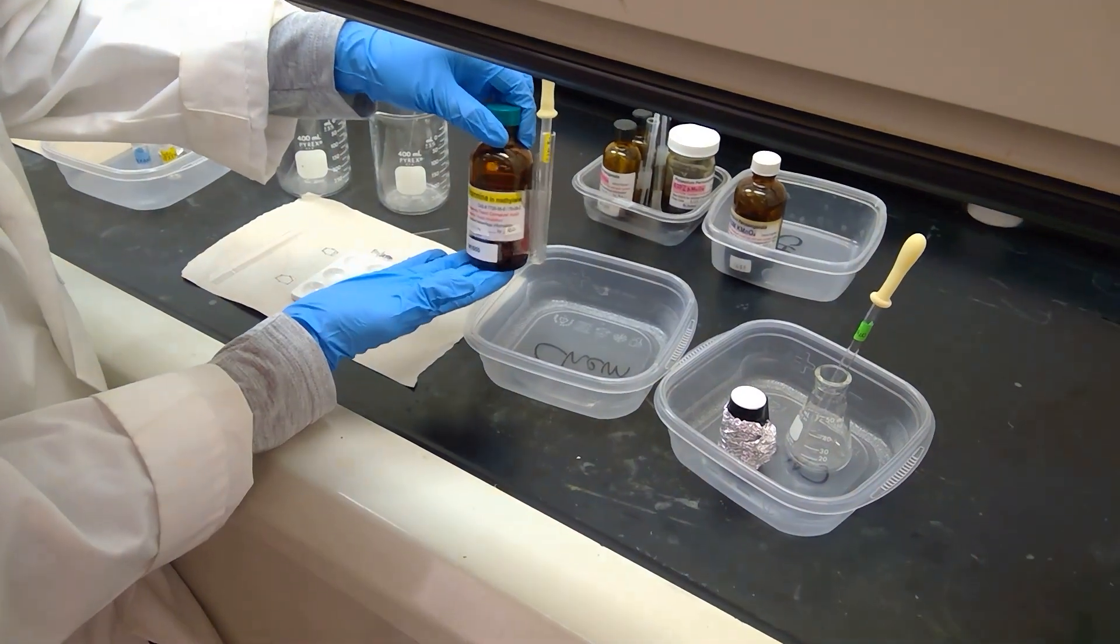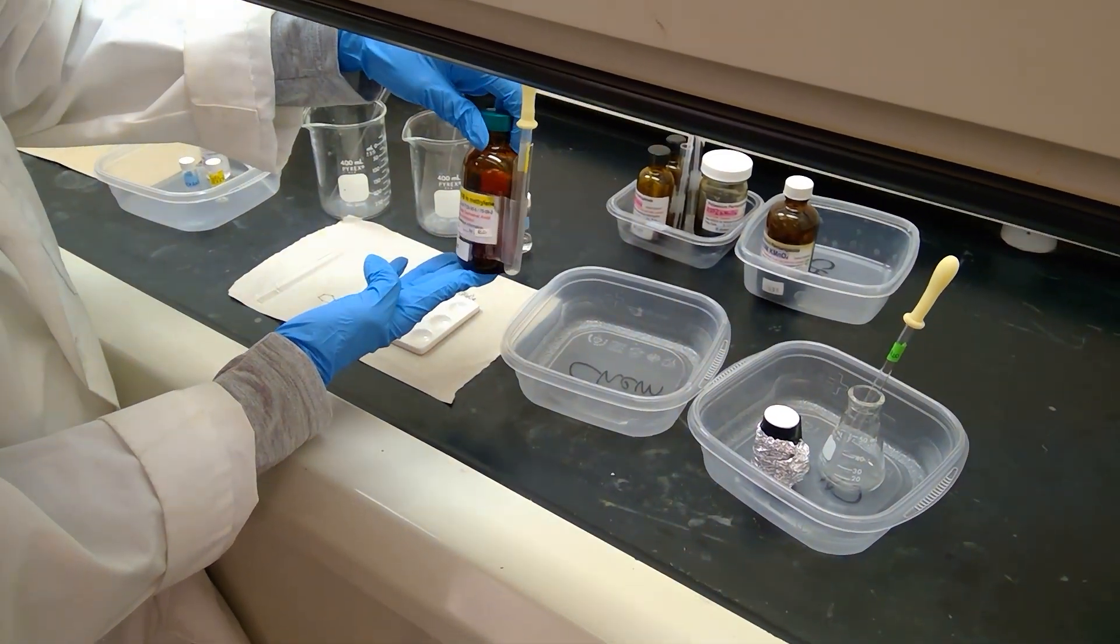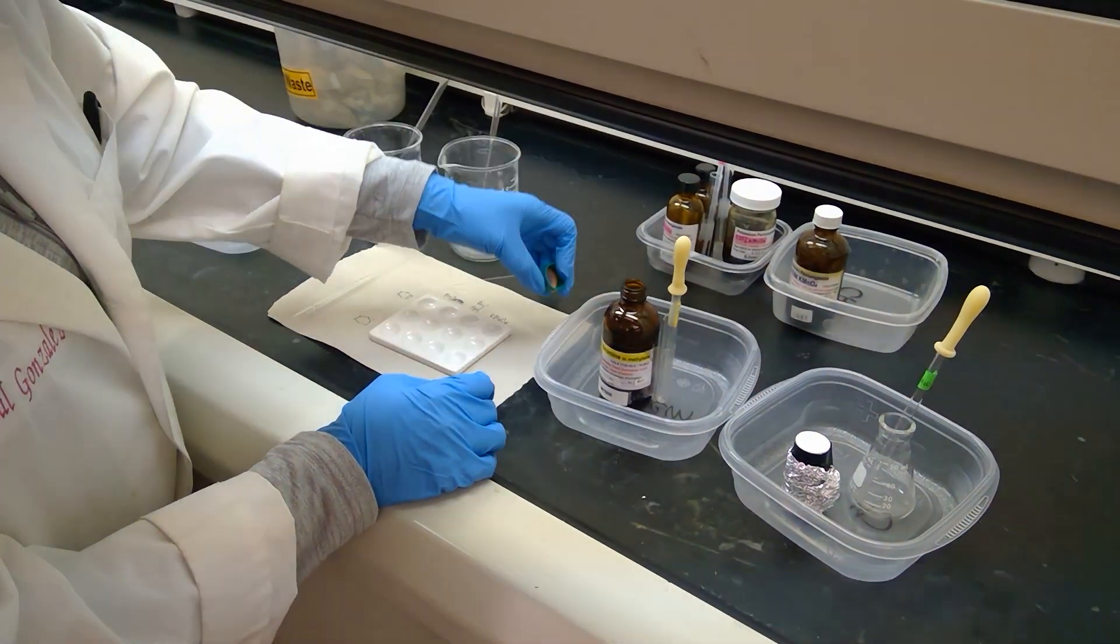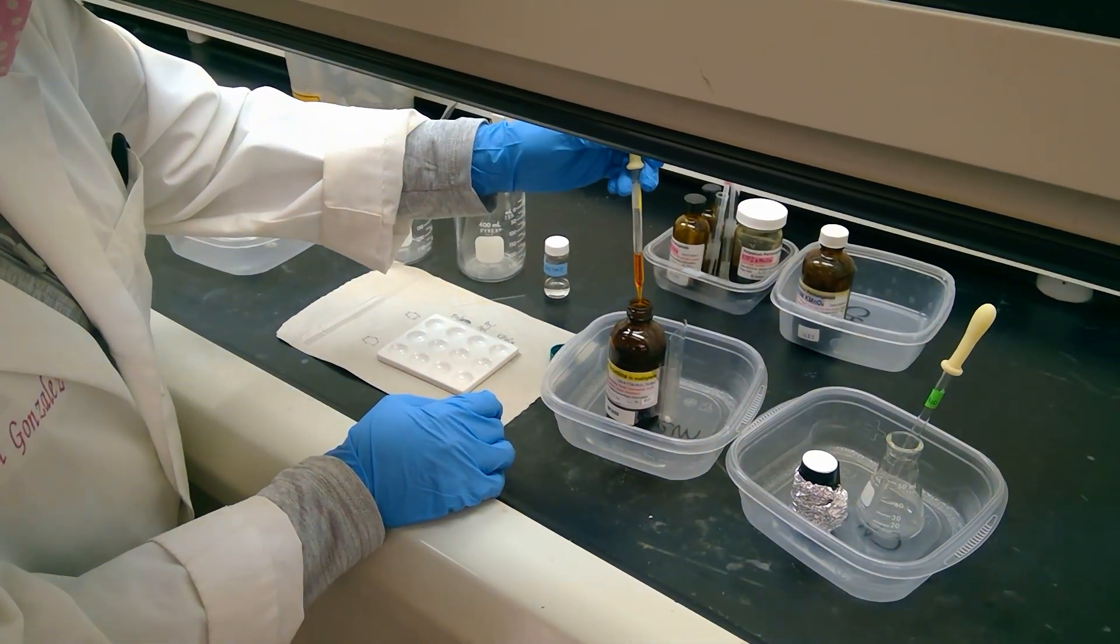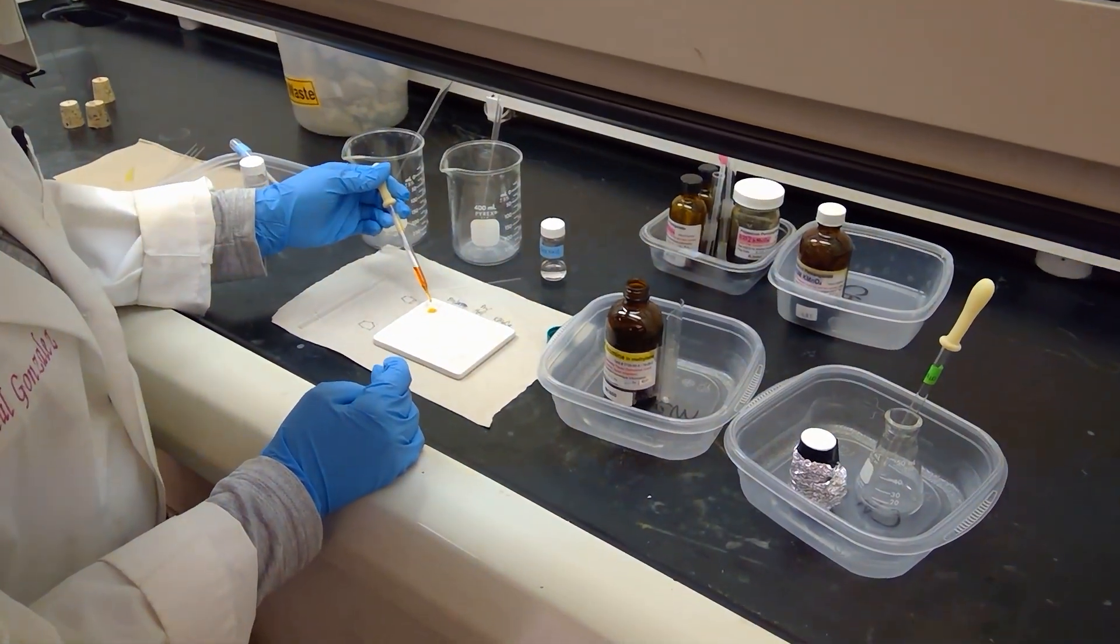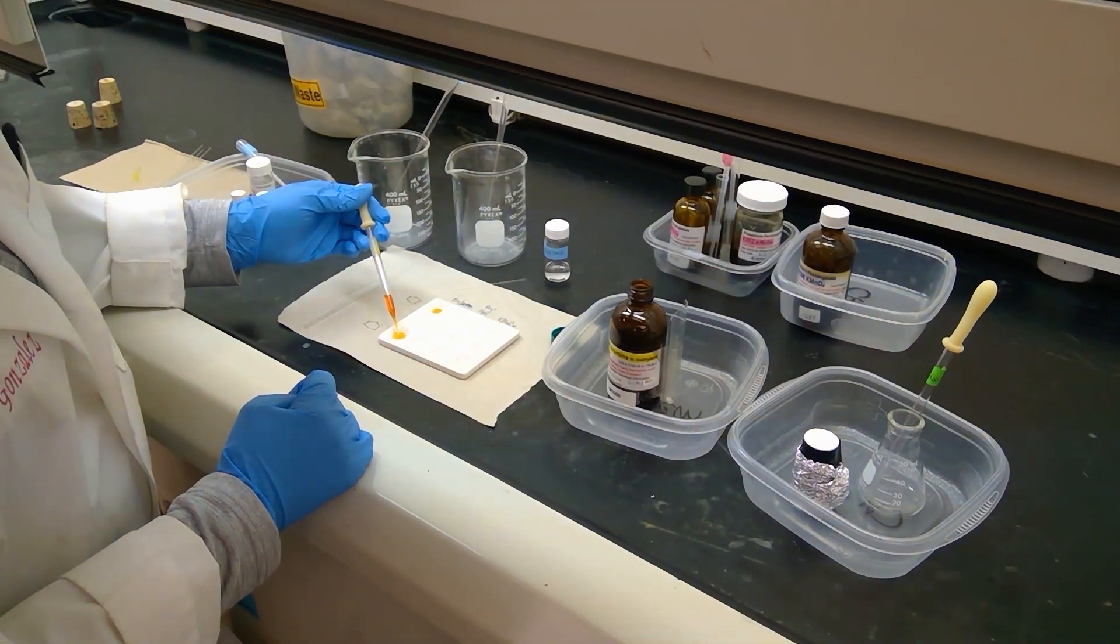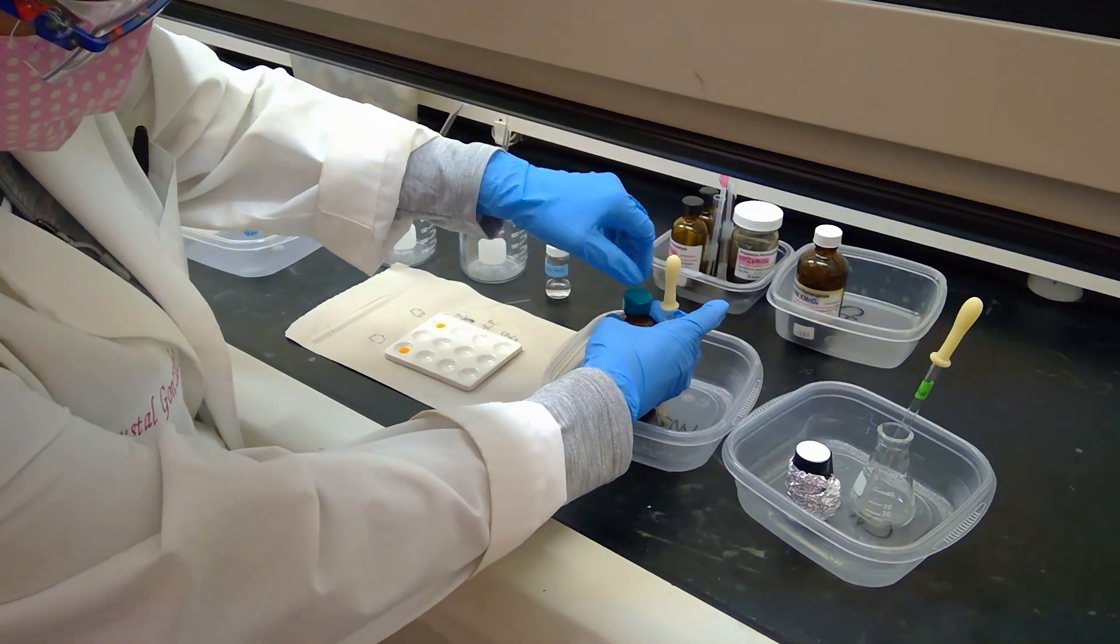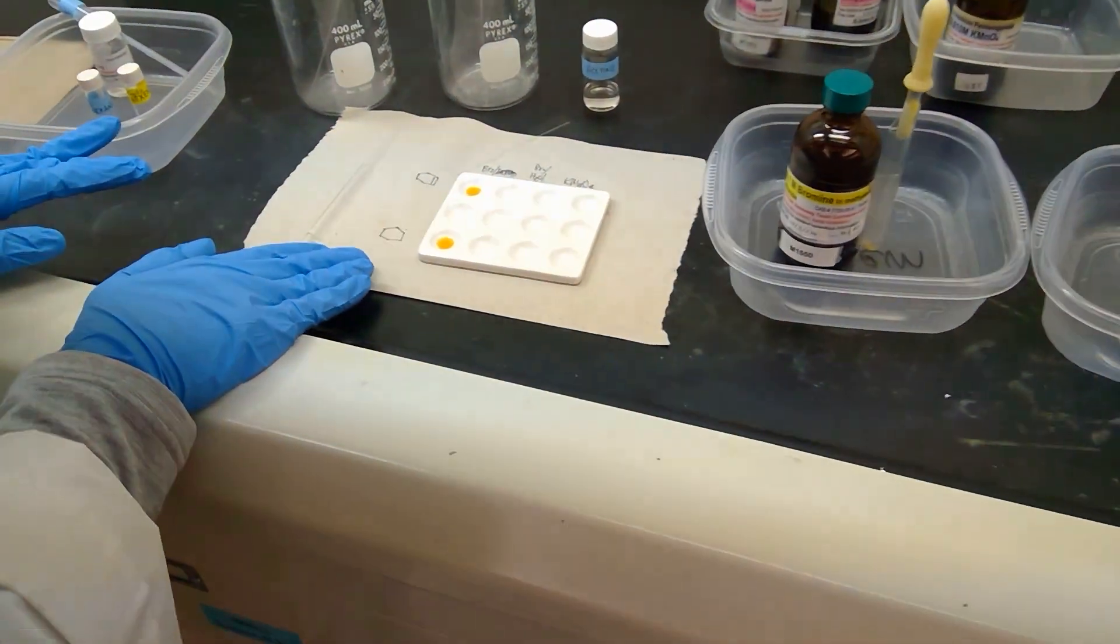Our first reaction is with some bromine here. We have 0.1 molar solution bromine dissolved in methylene chloride. I'm going to take a few drops and place them into my spot plate. Notice our bromine solution is a nice dark orange color. I'm putting five drops into each of my spot plates here.